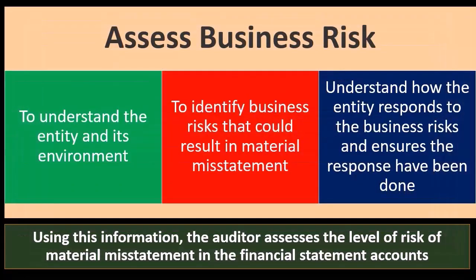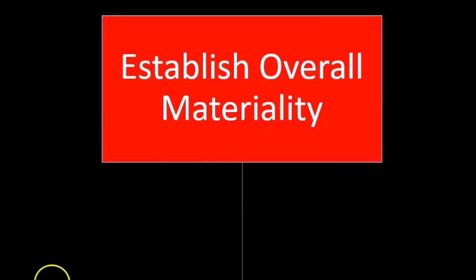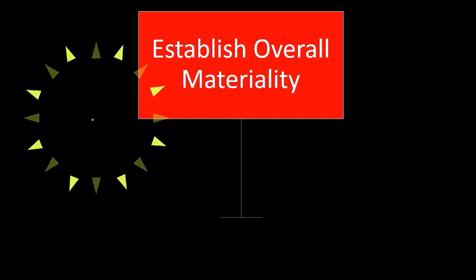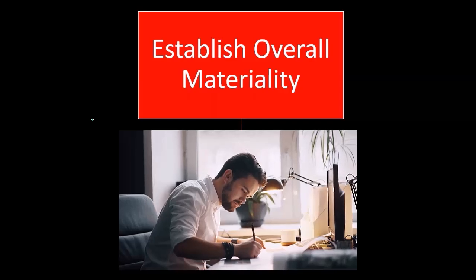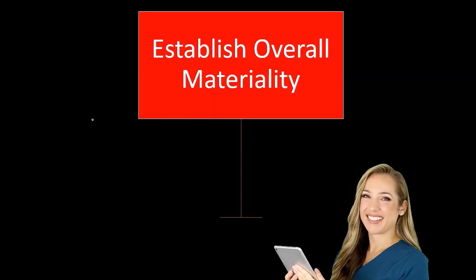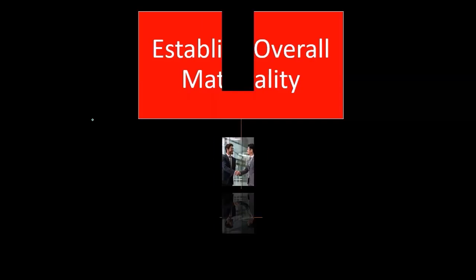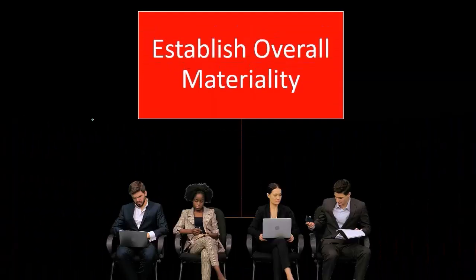Part of that evidence-gathering process on the front side of things is to assess the business risk and incorporate that into our plan, and then establish overall materiality. In the planning process we have to think about materiality, because that means the type of issue that could affect the decisions of people reading the financial statements — a problem large enough that a reasonable person may have their opinion affected if there is an error of that size.